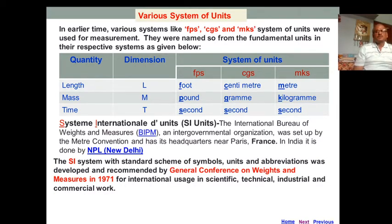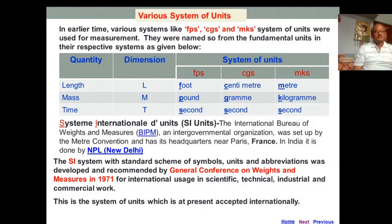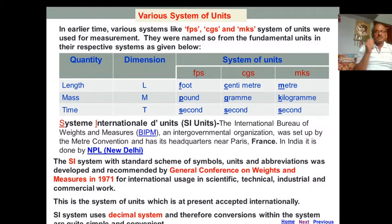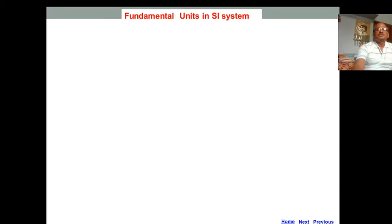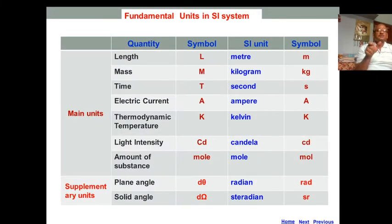The SI system with a standard scheme of symbols, units, and abbreviations was developed and recommended by General Conference on Weights and Measures in 1971 for international use in scientific, technical, industrial, and commercial work. This SI system is presently accepted internationally. SI system uses the decimal system, so conversion within the system is quite simple and convenient.